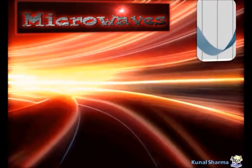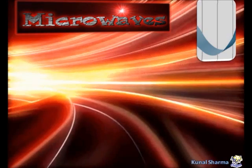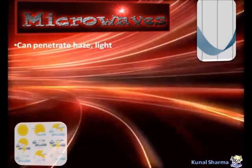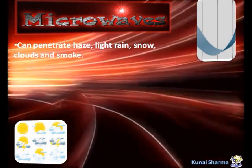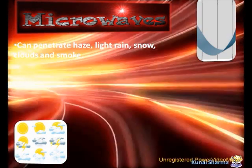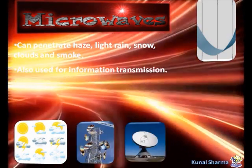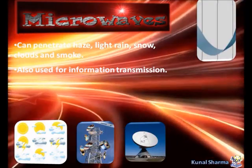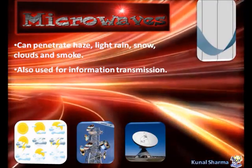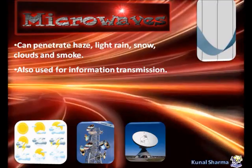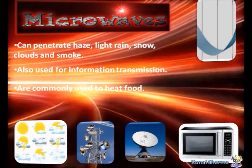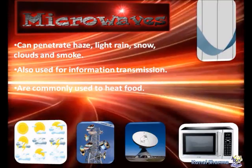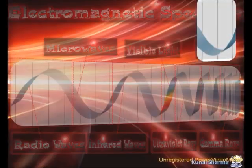Microwaves. Microwaves can penetrate haze, light rain, snow, clouds, and smoke. Microwaves are also used for information transmission. Microwaves are commonly used to heat food.